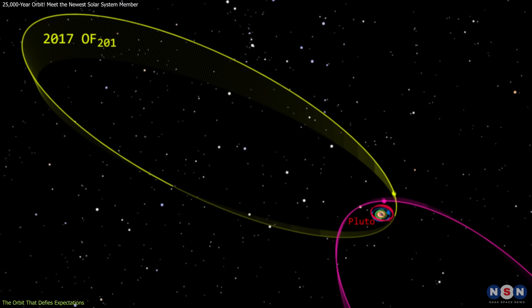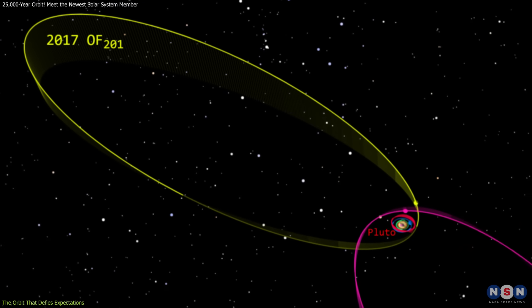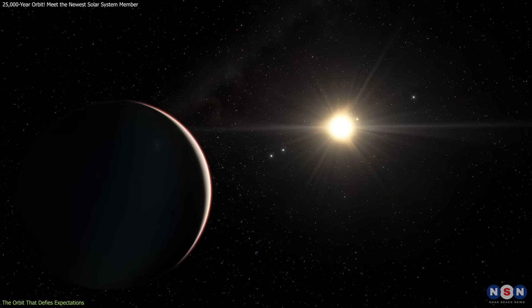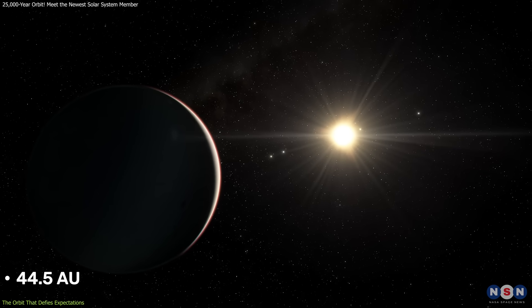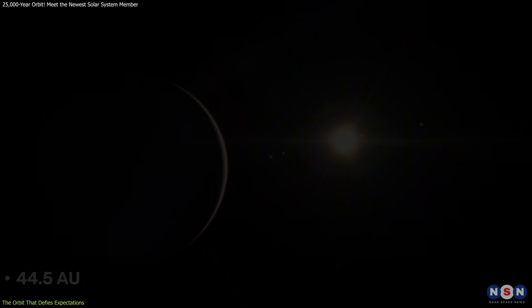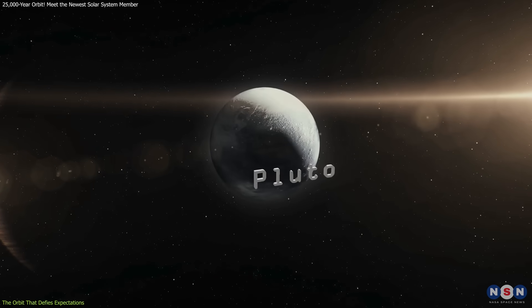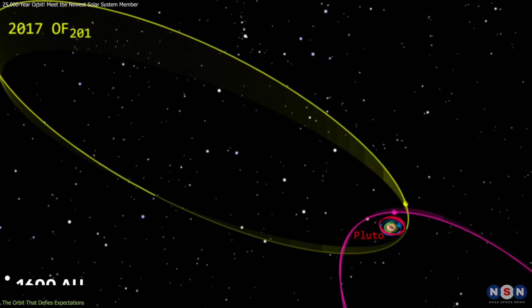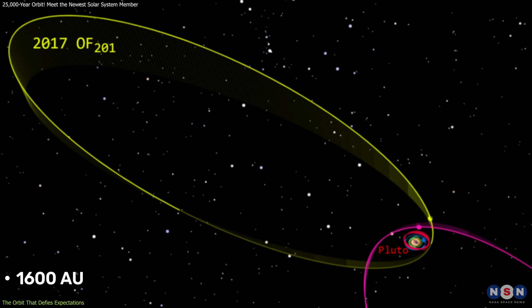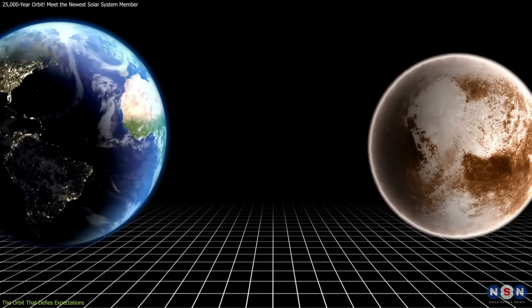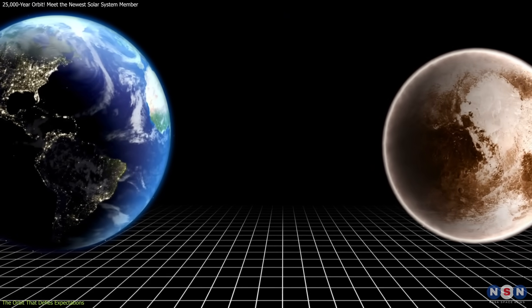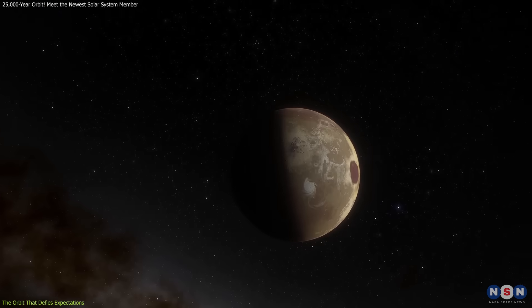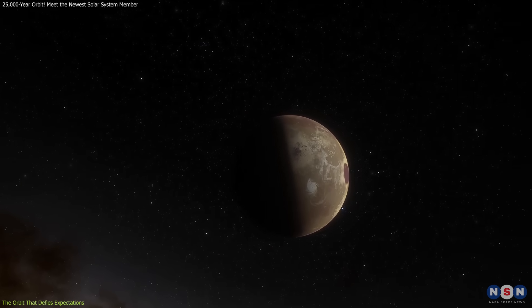2017 OF-201 travels on one of the most extreme orbits ever observed. Its closest approach to the sun, known as perihelion, is about 44.5 AU, similar to Pluto's farthest distance from the sun. But its aphelion, or farthest point, stretches an astonishing 1,600 AU away. That's more than 50 times the average distance between the Earth and Pluto. With an orbital period of roughly 25,000 years, this object spends the overwhelming majority of its journey in the deep, frozen outskirts of the solar system.